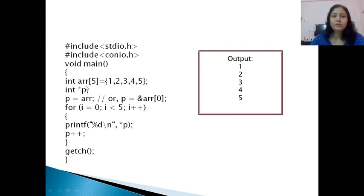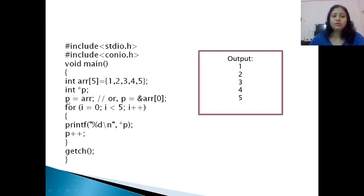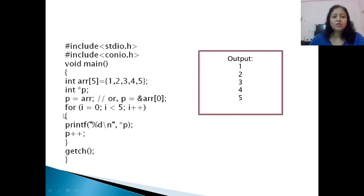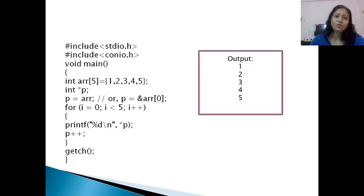In this program we declare ARR as an integer array of size 5 containing 5 elements. We also declare a pointer variable p of integer type to store the address. We assign p = ARR, because ARR stores the address of the first element, or equivalently p = &ARR[0]. Both are the same since ARR contains the base address. We use a for loop to display all values stored at the addresses, printing with pointer p.